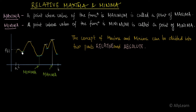Similarly, what can we say about point D? D is a point of relative minima. Similarly, other points give relative maxima and relative minima alternately — and so on.